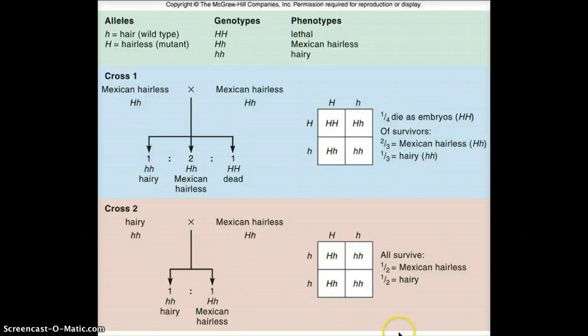Okay, so here we have some Punnett squares for lethal alleles. Now, normally when we think about alleles, we think of two possible phenotype outcomes.